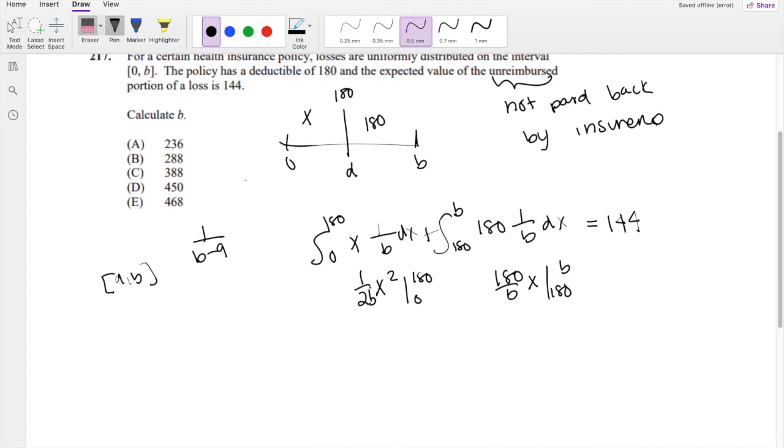Okay, so let's see. When I plug it in for the top limit, I get 180 squared over 2B, anything times 0 is just 0,